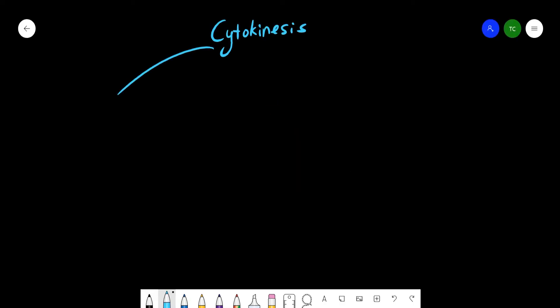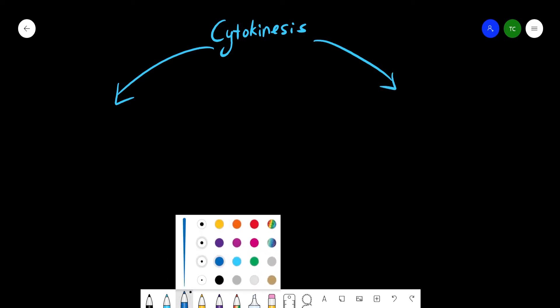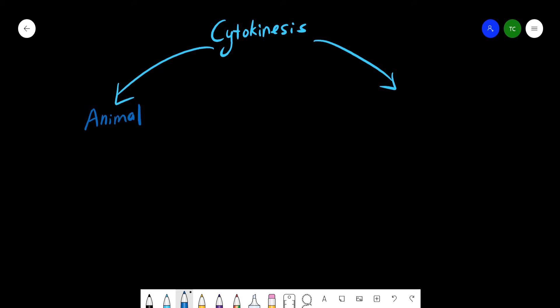All right, hello guys, welcome back to the channel. Today we're going to focus on cytokinesis. For cytokinesis, we can actually divide into two groups, which is the animal cell and also the plant cell. As we know, animal cells have no cell wall, but plant cells have cell walls, so the mechanism is a bit different.